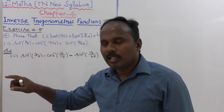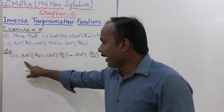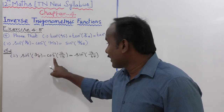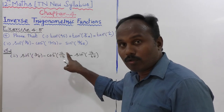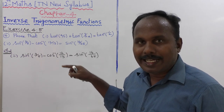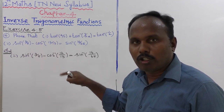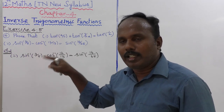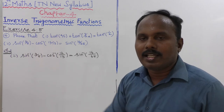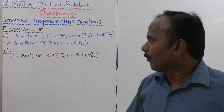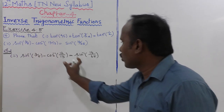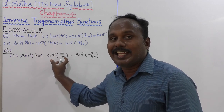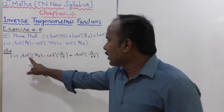The formula of 11th standard: we know that sin inverse of X minus sin inverse of Y is equal to sin inverse of X into root of 1 minus Y square plus Y into root of 1 minus X square. That is the formula. So this one only converted to sin inverse of X.